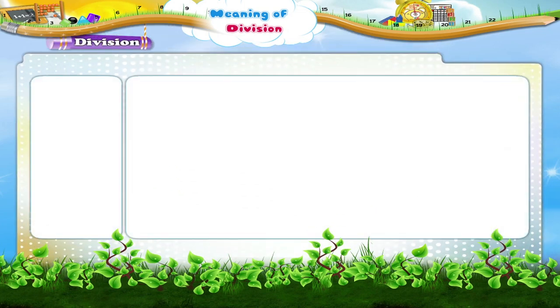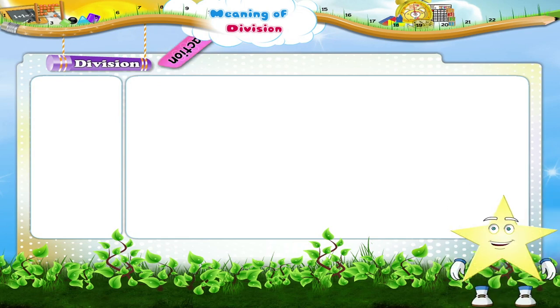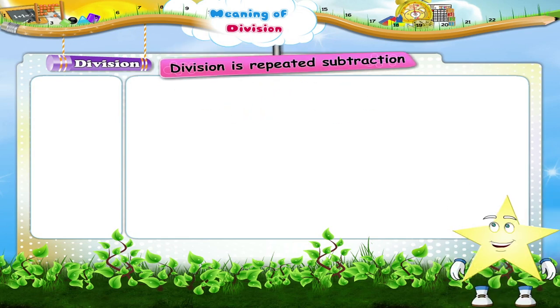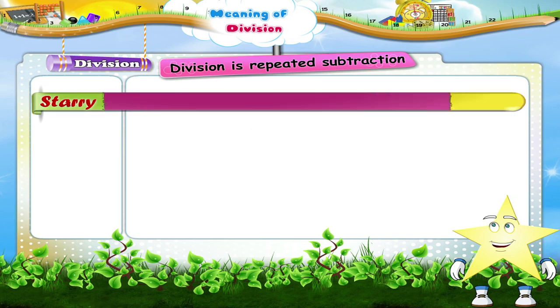You need to know division. Starry, division is repeated subtraction.